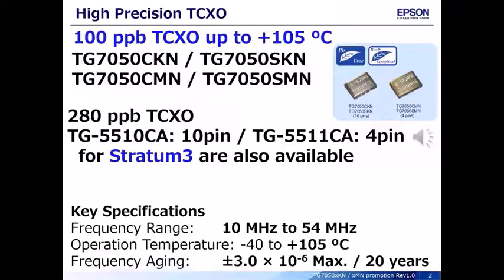TG7050XKN and TG7050XMN is a 100 ppb TCXO available with either CMOS or clipped sine output. If the letter after the model name is C, it is CMOS; if it is S, it is clipped sine output. The K series is 10 pins and the M series is 4 pins. Available in frequencies from 10 to 54 MHz.